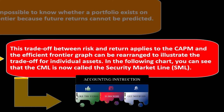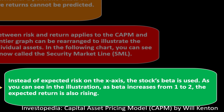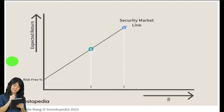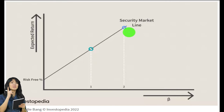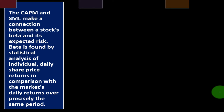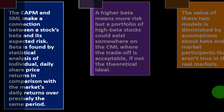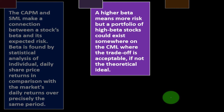The efficient frontier graph can be rearranged to illustrate the trade-off for individual assets. The CML is now called the Security Market Line (SML), with the stock's beta used on the x-axis instead of expected risk. As beta increases from one to two, the expected return is also rising. The CAPM and SML make a connection between a stock's beta and its expected risk. Beta is found by statistical analysis of individual daily share price returns compared with the market's daily returns over precisely the same period.